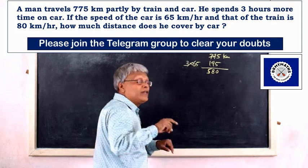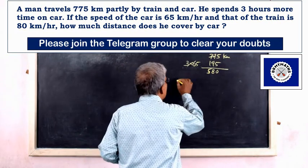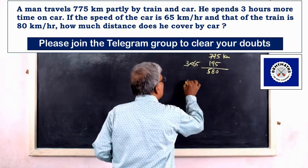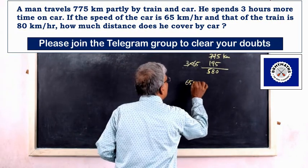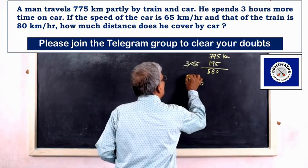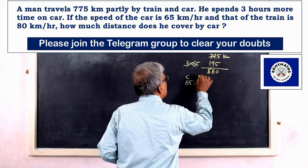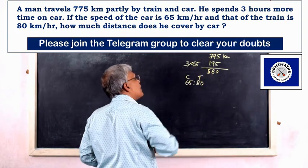The car speed is 65 km/h and the train speed is 80 km/h.